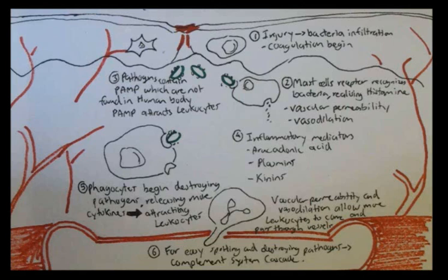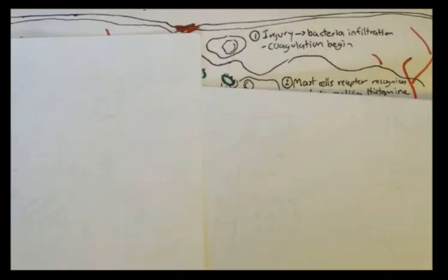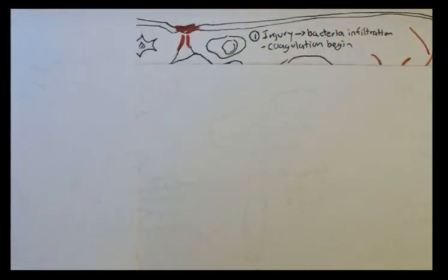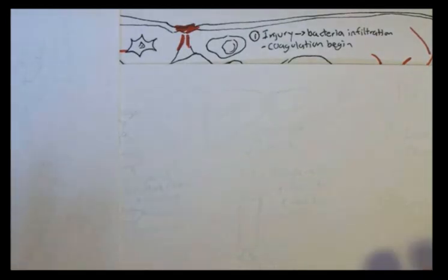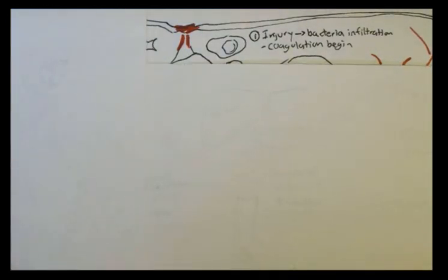To summarize: these processes can happen simultaneously or in varying order. First, the injury occurs, bacteria infiltrate the body, coagulation begins, the healing process begins, and the signs of inflammation occur — redness, swelling, and pain.